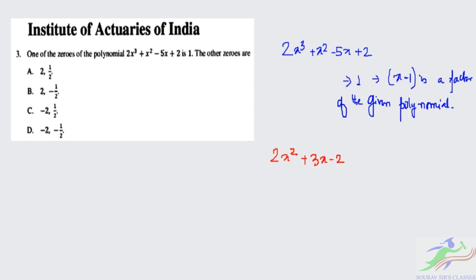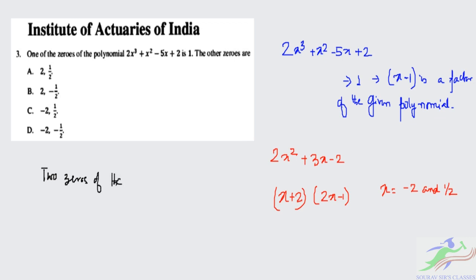What are the factors of 2x² + 3x - 2? One factor is (x + 2) and another is (2x - 1). So the other two zeros are x = -2 and x = 1/2. Checking with the options, the correct option is C, that is -2 and 1/2.